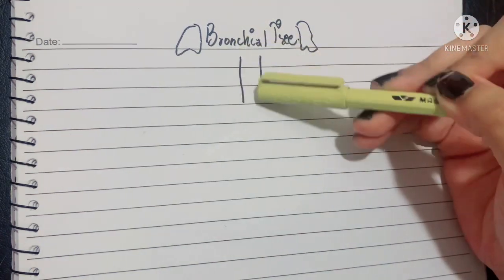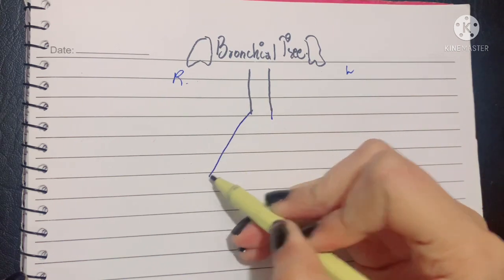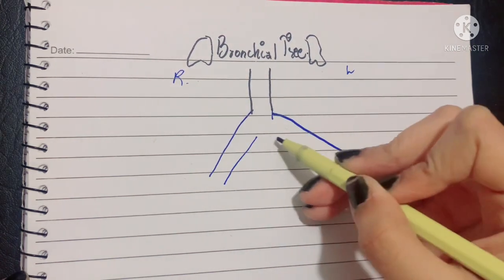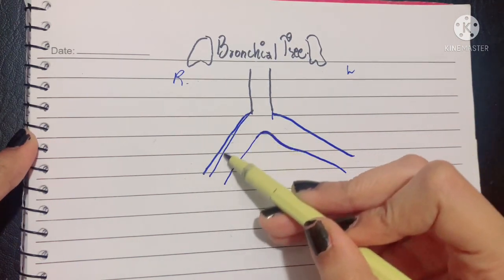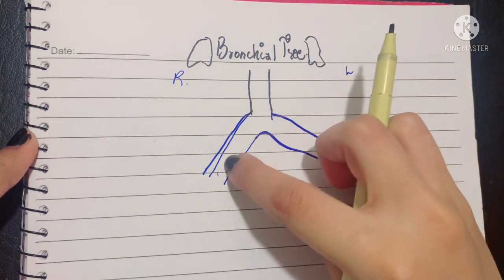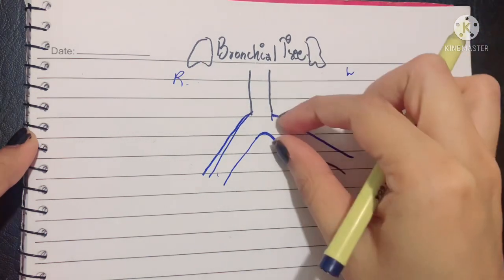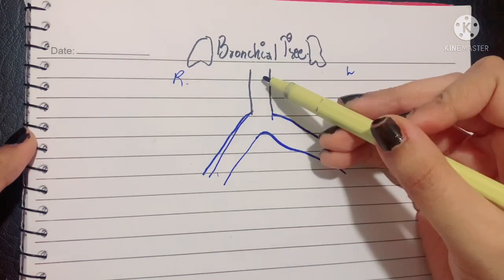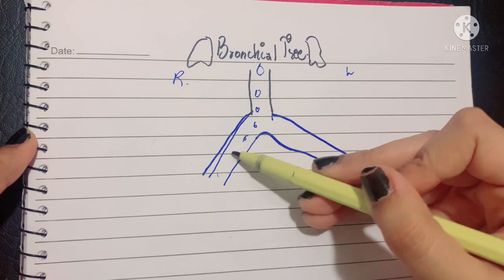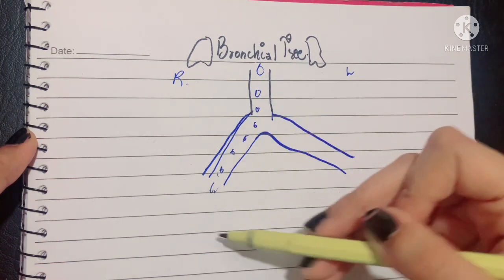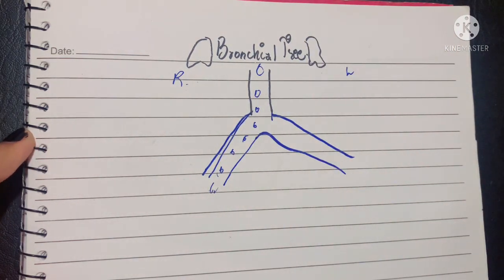Now let's talk about the bronchial tree. When the trachea divides into two principal bronchi, the right-sided bronchus is more vertical while the left-sided bronchus goes more obliquely. The right bronchus is wider and more in line with the trachea, while the left bronchus is narrower and more angled. This means a foreign body or infection is more likely to go to the right side first, as it is wider and shorter than the left bronchus.